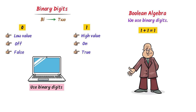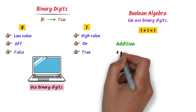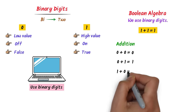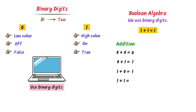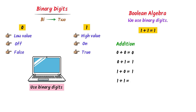Consider addition of binary digits in Boolean algebra. We know that 0 plus 0 is equal to 0, 0 plus 1 is equal to 1, and 1 plus 0 is equal to 1. Now, 1 plus 1 would be 2, but in Boolean algebra there is no such digit as 2, so 1 plus 1 is equal to 1.